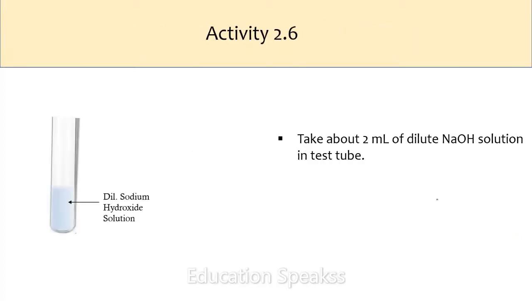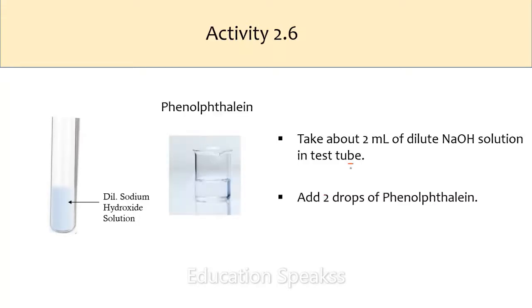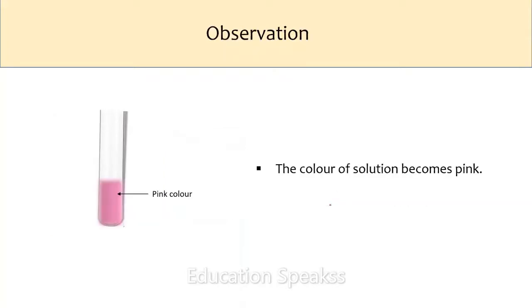Take about 2 ml of dilute sodium hydroxide in a test tube and add 2 drops of phenolphthalein solution. After adding phenolphthalein to the base sodium hydroxide solution, the color of the solution becomes pink.